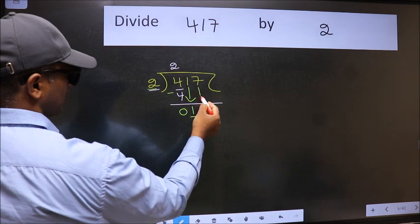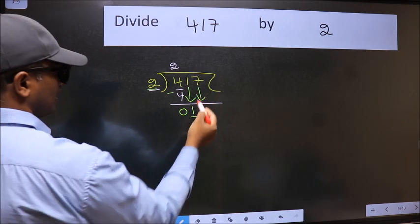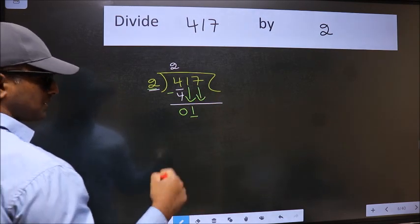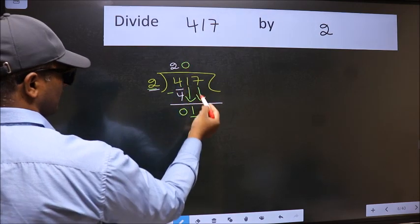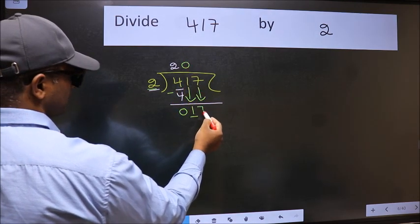So we should bring down the second number. And the rule to bring down the second number is we should put 0 here. Then only we can bring down this number.